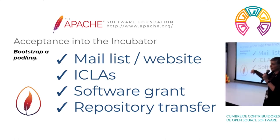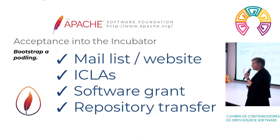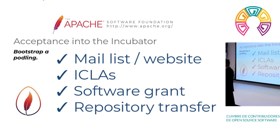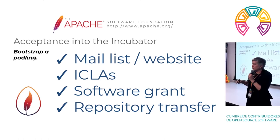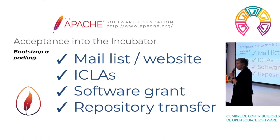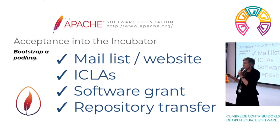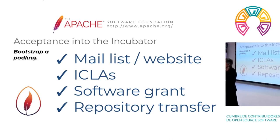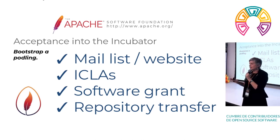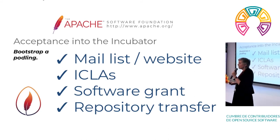Once the podling is in the incubator, we start setting you up. We create a mailing list for you; infrastructure sets up publishing to a web domain for your website. All of your contributors need to submit ICLAs — Individual Contributor License Agreements — in which they basically say: I'm going to license IP to you, and your users can expect that anything I contribute they have a right to use. If there's an existing code base — maybe it belongs to a company like Alibaba, Tencent, or Google — then that code base is granted to the Apache Software Foundation in the form of a software grant. Then we start actually moving the code.